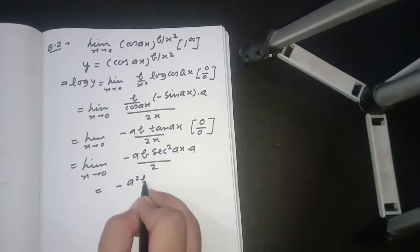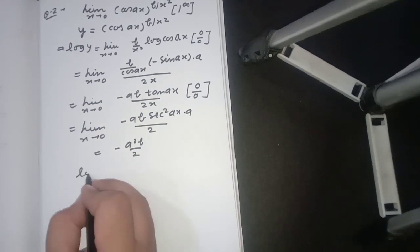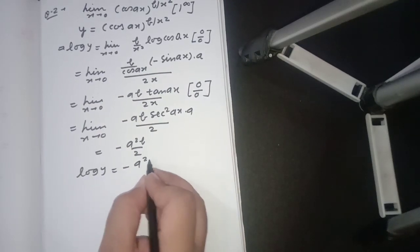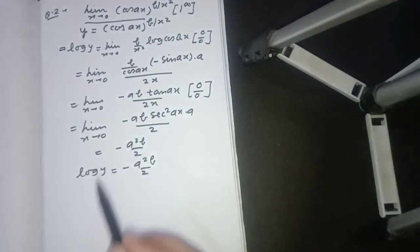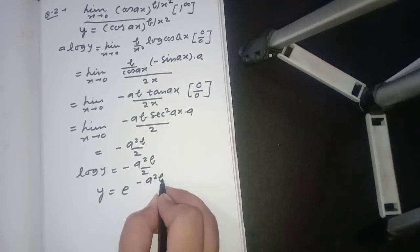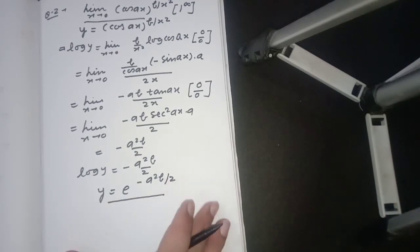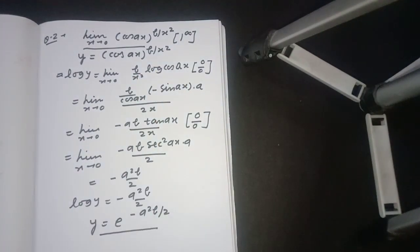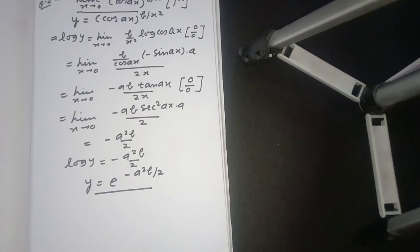So log y equals minus a²b upon 2, and since the original expression was taken equal to y, we get y equals e to the power minus a²b upon 2. We can see that for all such types of questions of the form 1 to the power infinity, 0 to the power infinity, or infinity to the power 0, we take the log. By taking the log, the expression comes into the form 0 upon 0 or infinity upon infinity, which can be evaluated easily.